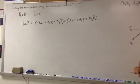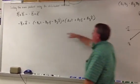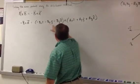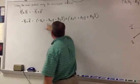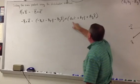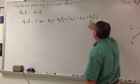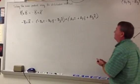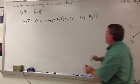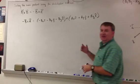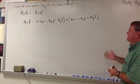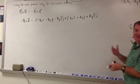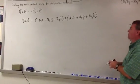Double-checking everything: bx, by, bz — i, j, k — all three are negative. ax, ay, az — i, j, k. Now double-check everything because it's very easy to make a mistake using the distributive property on paper.